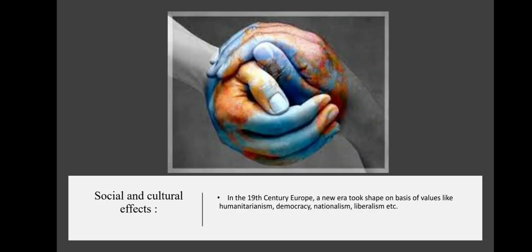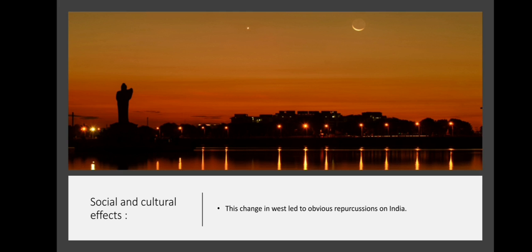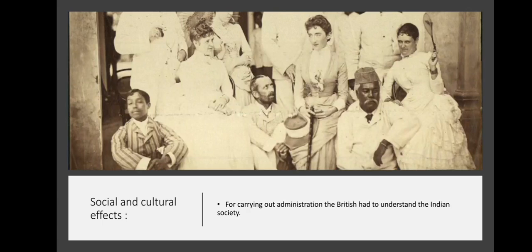Social and Cultural Effects. In the 19th century, Europe saw a new era shaped by values like humanitarianism, democracy, nationalism, and liberalism. This change in the West led to repercussions on India. For carrying out administration, the British had to understand Indian society, and for this purpose they started studying the tradition, history, literature, music, flora and fauna of India.